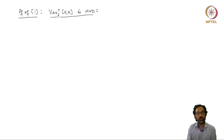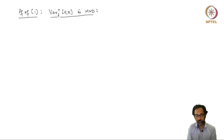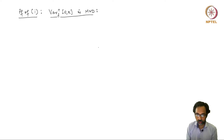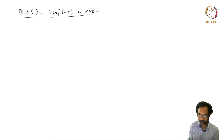Now let us look at the proof of the first claim. I will only show first that the positive variation is monotonically non-decreasing and I will leave the case for the negative variation to be monotonically non-decreasing as an exercise. So, to show that this positive variation is monotonically non-decreasing.